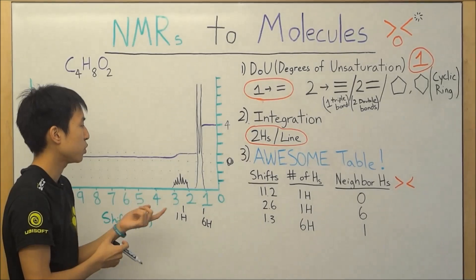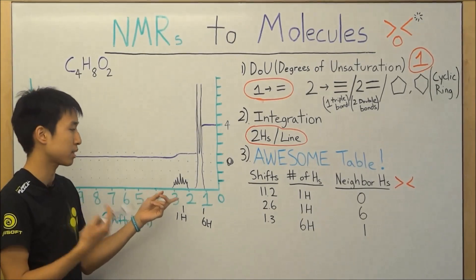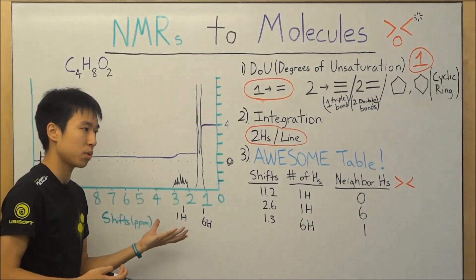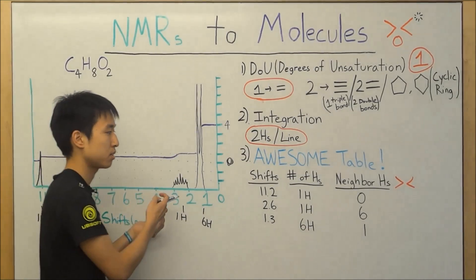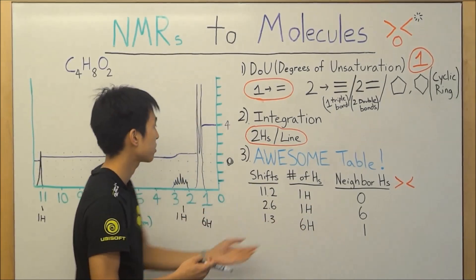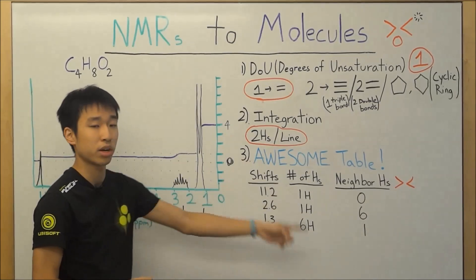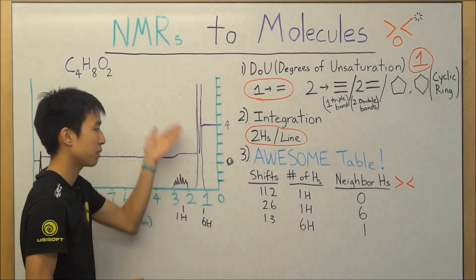But basically, if you have a splitting pattern of a 7, or a septet, in order to get that, you did n plus 1 to get to 7. So you must have only 6 hydrogen neighbors. For our doublet, you only have one hydrogen neighbor in order to cause this splitting pattern.